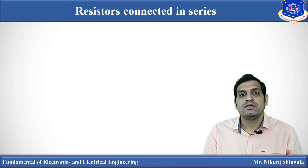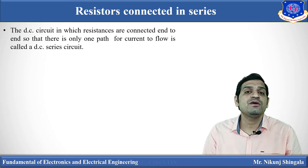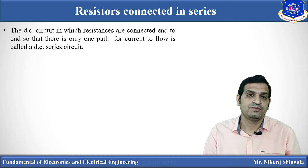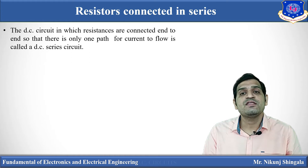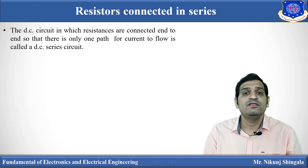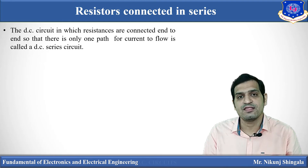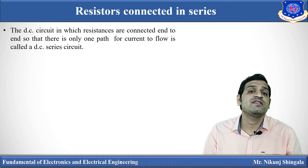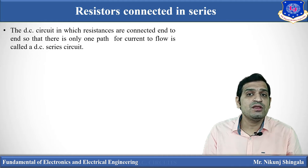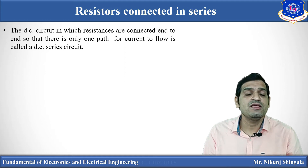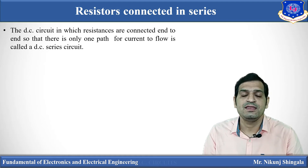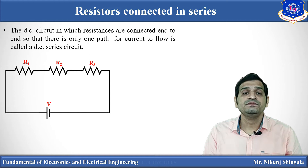Now, series connection of resistors. The definition: a DC circuit in which resistors are connected end to end so that there is only one path for the flow of current is known as a DC series circuit, and the resistors are said to be connected in series. The conditions are end-to-end connection and only one path for current flow.